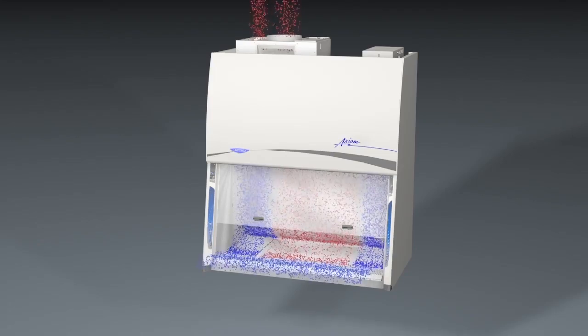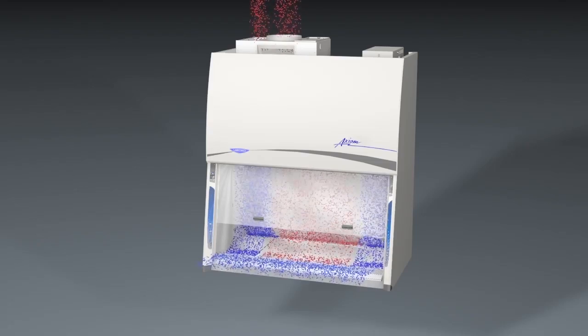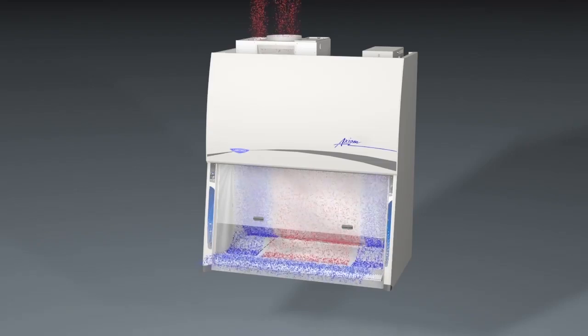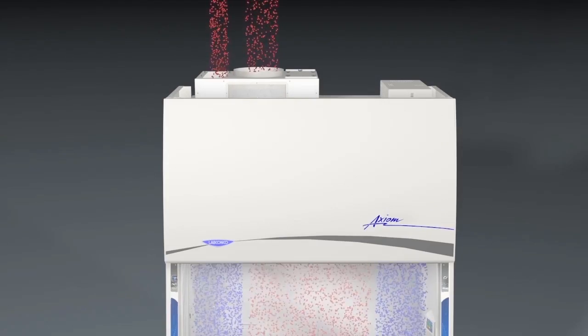During use, the air above the chemzone work surface is directed to the BSC's exhaust interface where it leaves the cabinet. In A mode, it leaves through the exhaust collar and bypass opening.